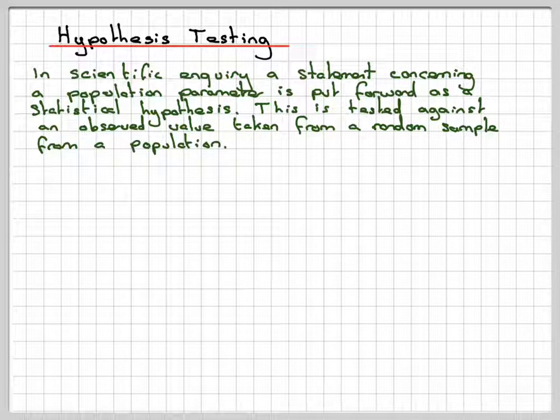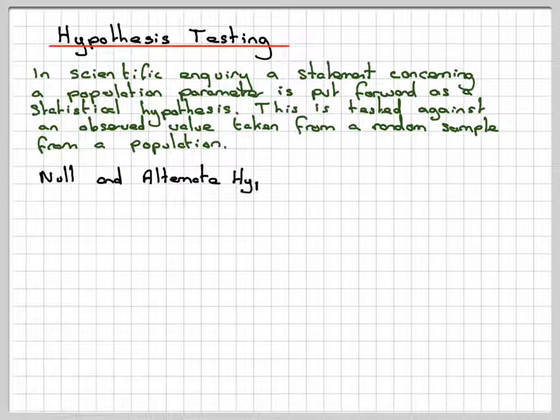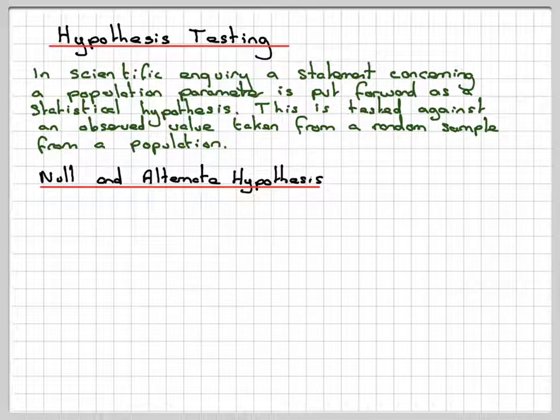And then we could test to see whether people did better than 40%. So the alternative hypothesis would be P is greater than 40% or P is greater than 0.4. So then we have this idea of what's known as null and alternate hypothesis.